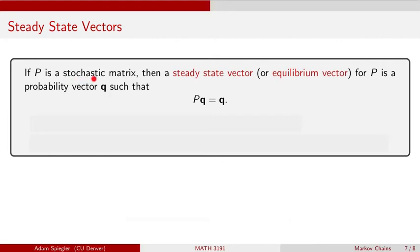Let's let P denote a stochastic matrix. So this means every column in matrix P has entries that add up to one. Then a steady state vector, which we may also call an equilibrium vector for this matrix P, is a probability vector, meaning the entries of vector q must add up to one, such that when we apply the transition matrix to vector q, we get vector q back. So in other words, matrix P does not do any transformation to this vector q.